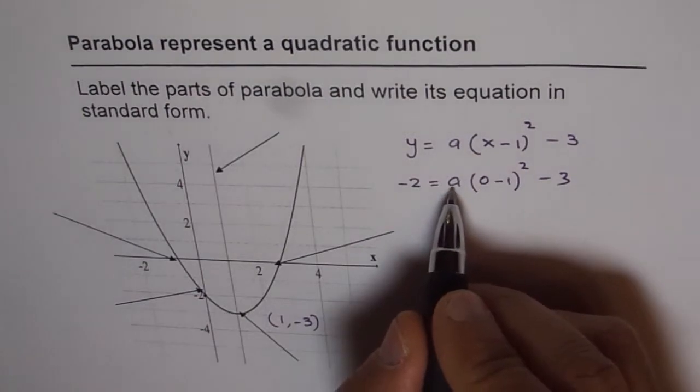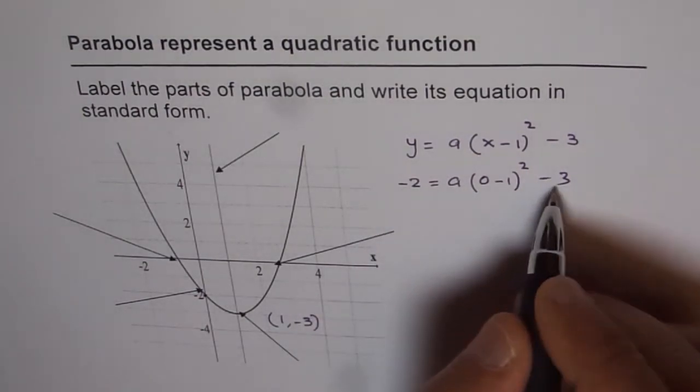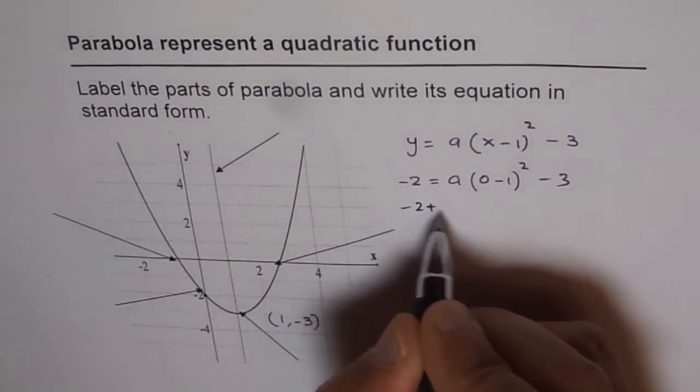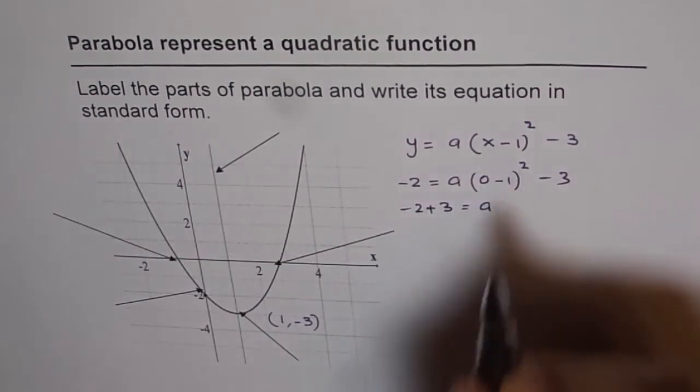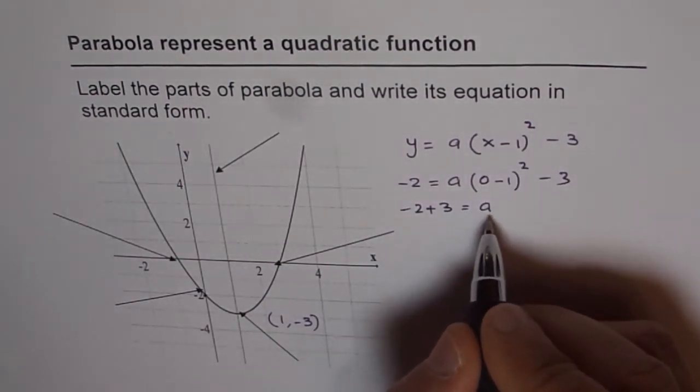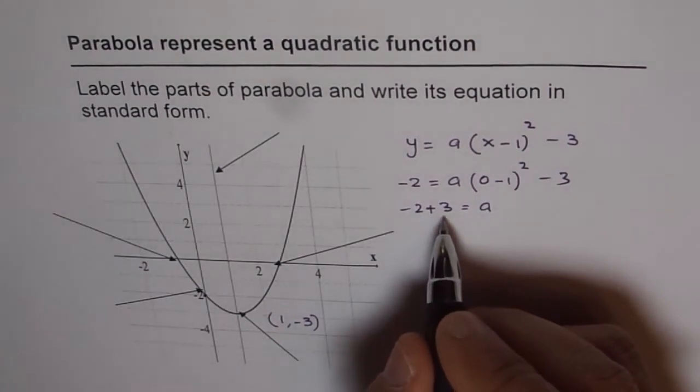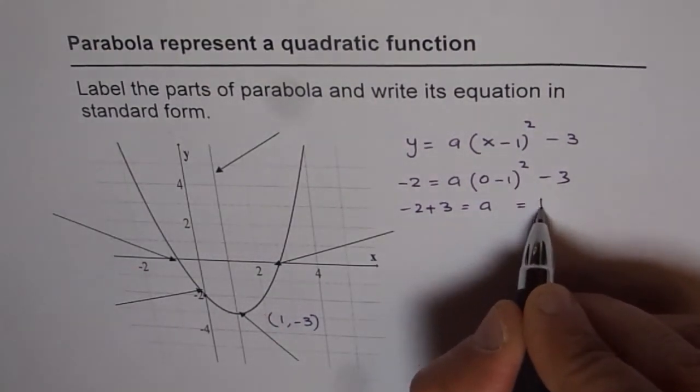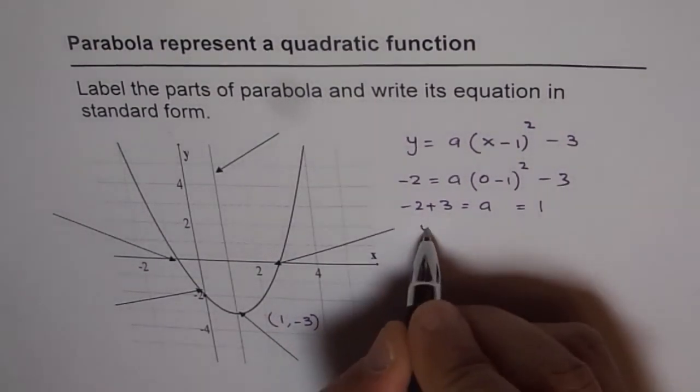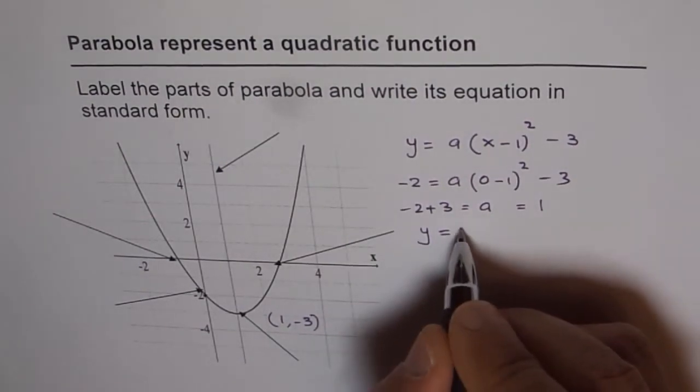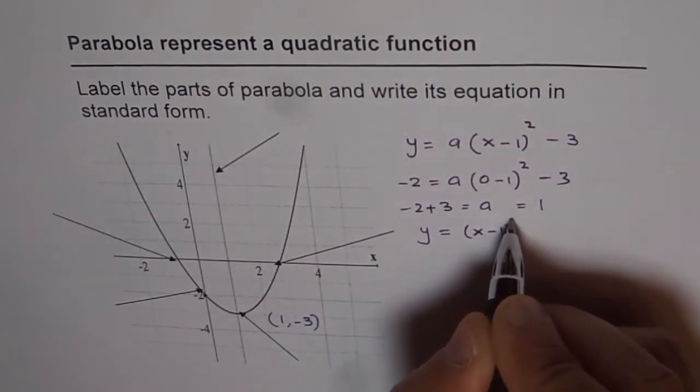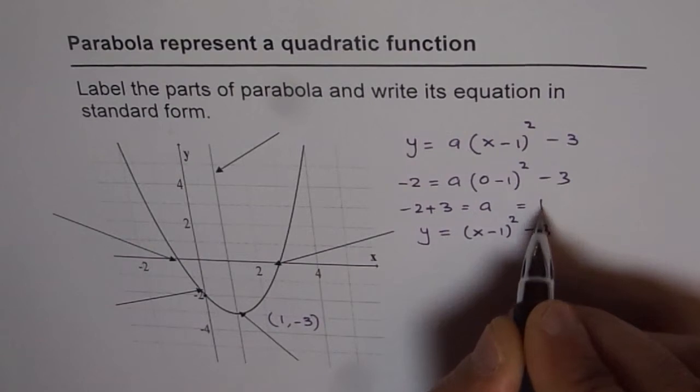So we have a equals to minus 2 plus 3 equals to a since 1 square is just 1. So a equals to 1 for us. So this is a very simple equation which is y equals to x minus 1 whole square minus 3 since a is 1.